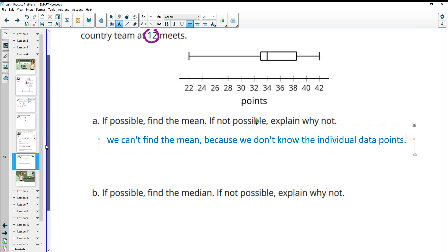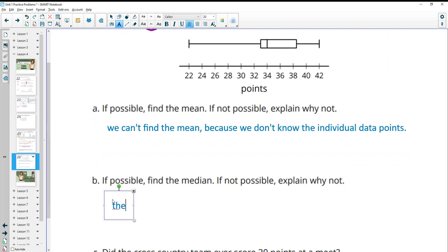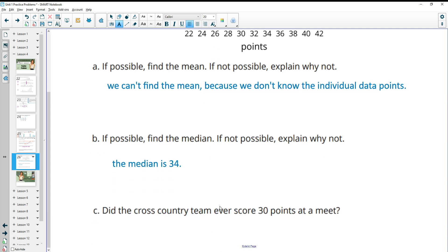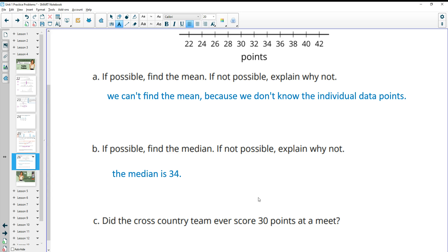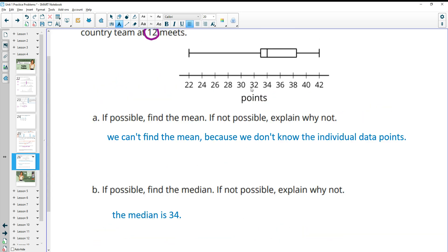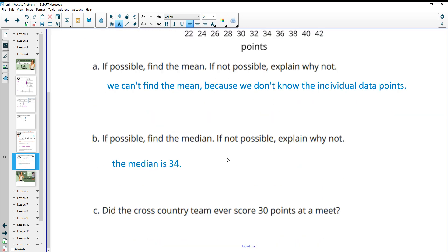In part B, it wants us to find the median, if possible. So we know the median is 34, because we can see that with this middle line here. So the median is 34. Part C, did the cross-country team ever score over 30 points at a meet? And we see 30 points is right here. And we can see they clearly did, a lot of times, score over 30 points, especially since the median is at 34. The max is 42. So yes, the max score they achieved was 42. So they definitely scored over 30 points.